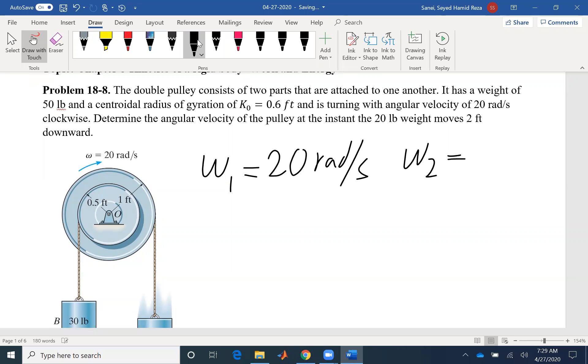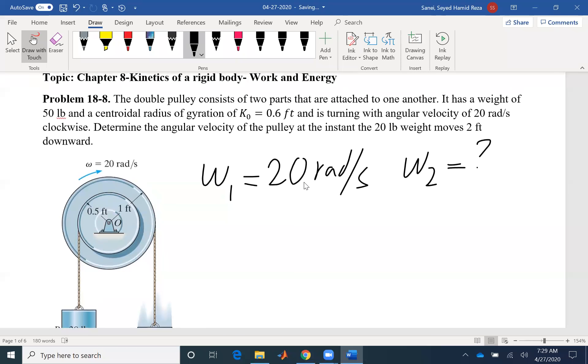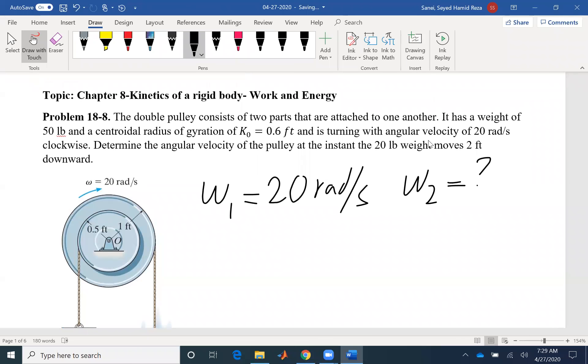We want to find the final angular velocity at the instant the 20 pound weight moves two feet downward. So when this one is moving two feet downward. So when we have the initial angular velocity, we want to find the final angular velocity. And also we wanted at an instance that the weight has moved two feet.